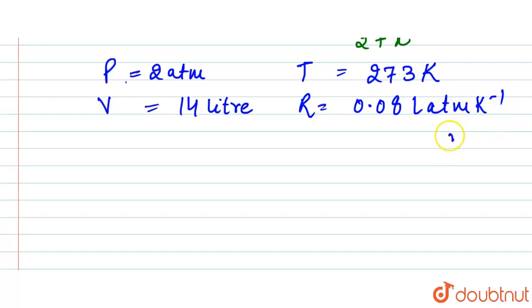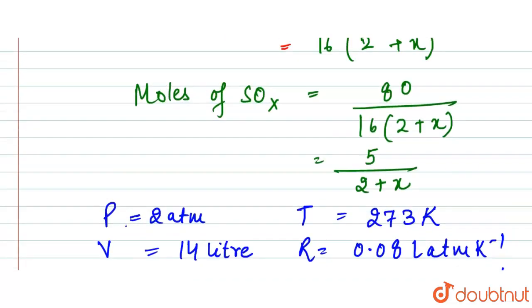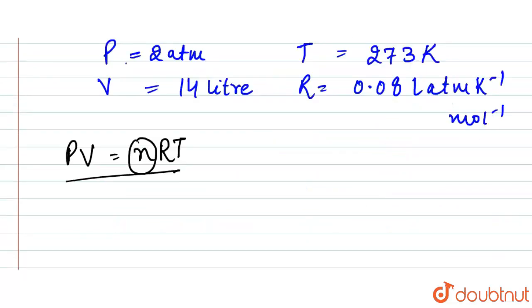Now we can use the equation PV = nRT. Here our n value is also known to us - that is 5/(2 + x), which is the number of moles. P is 2 into 14.